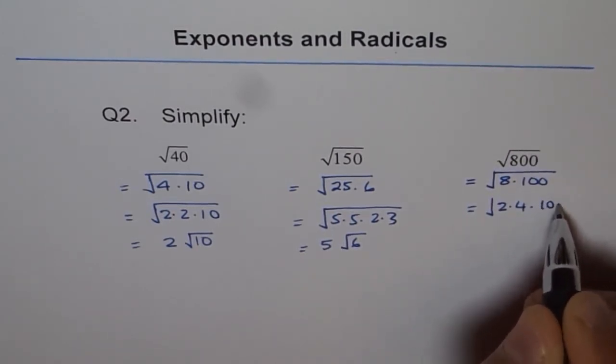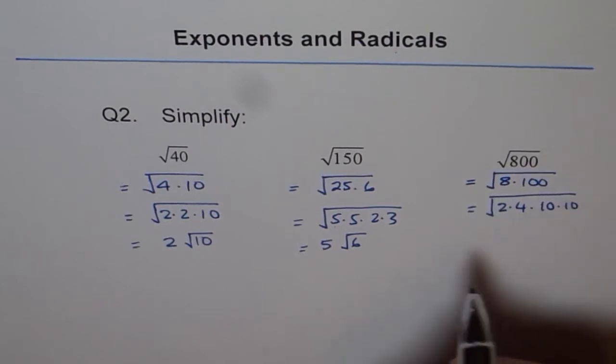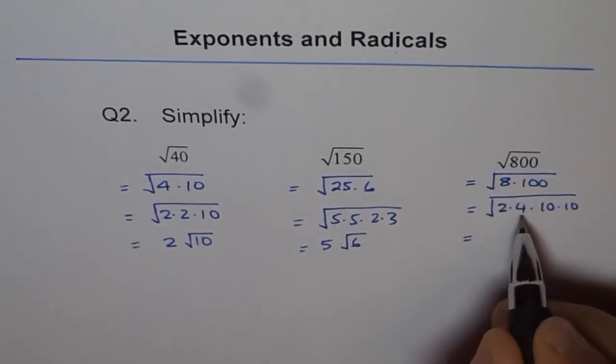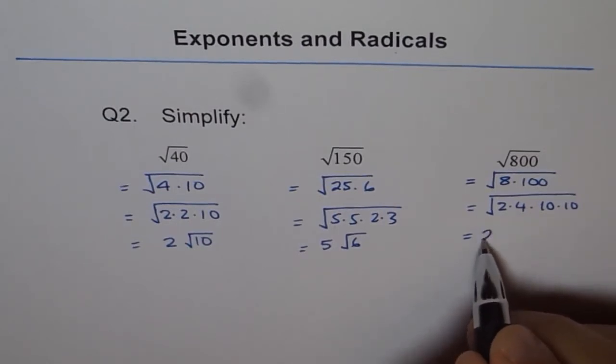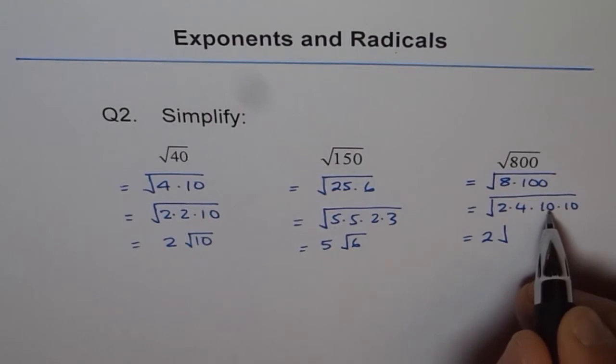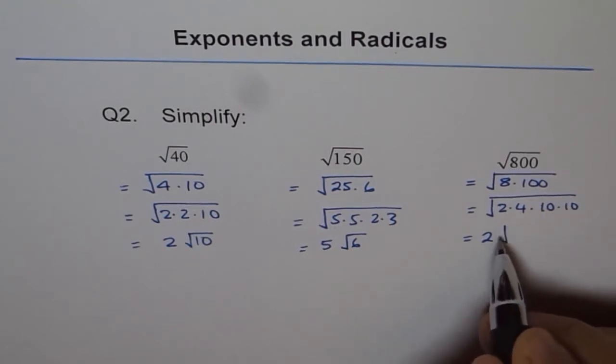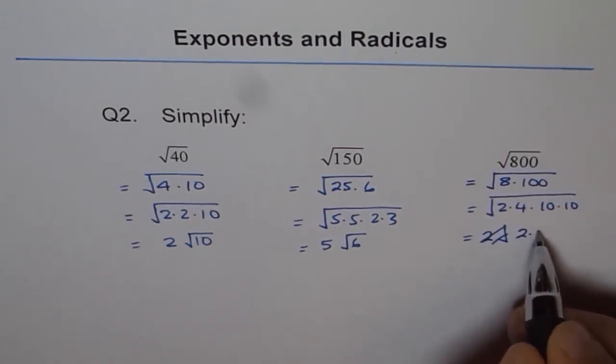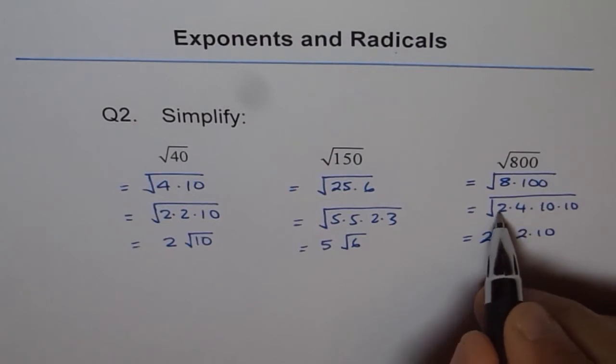We've got 4 as a perfect square, and instead of 4 I can take out 2, because 4 is 2 squared. I can factor out one of the 10s. So I factor out 2 and 10 and leave one 2 here, giving me 20 times square root of 2.